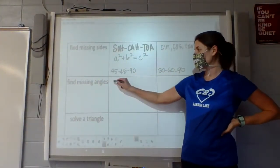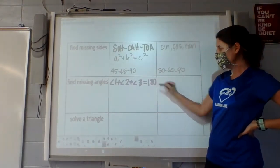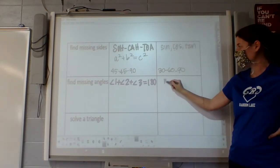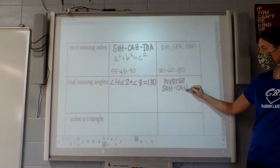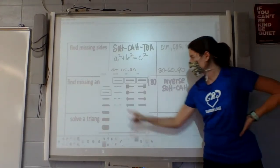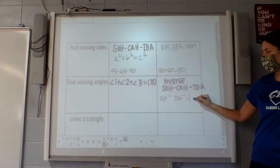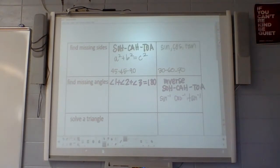Now, to find missing angles, we first of all know that the angles should add to what? 180. Now, you can also use SOH CAH TOA, but this is where we use the inverse SOH CAH TOA. Which, those are where we have the sine inverse, cosine inverse, and tangent inverse, which is a button on your calculator right above the other ones. So, that's when you're looking for an angle, you should be using those, or you can just know they add up to 180.